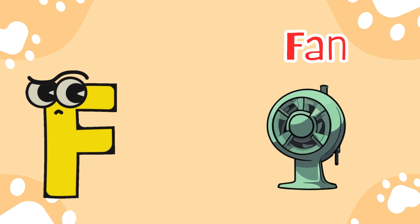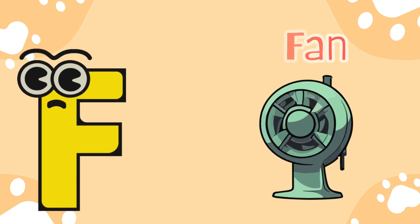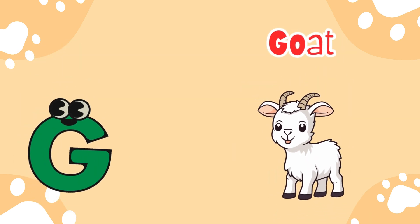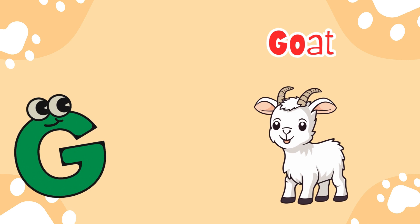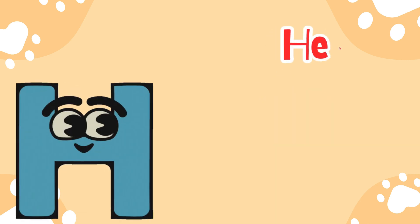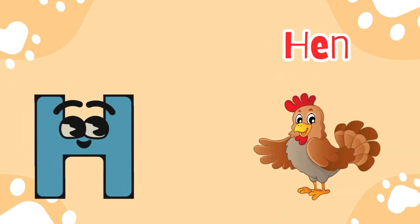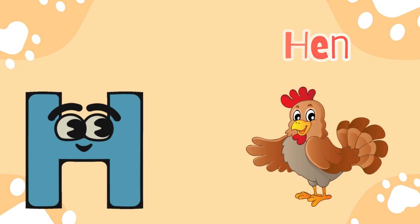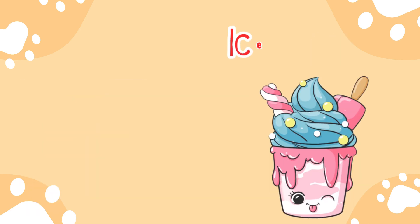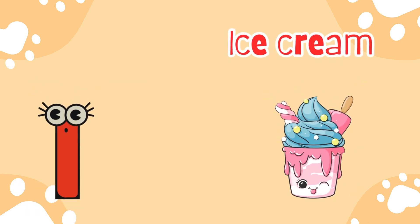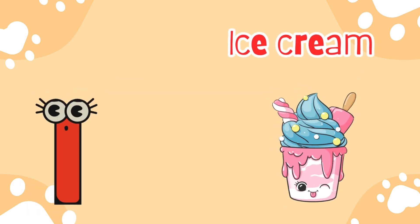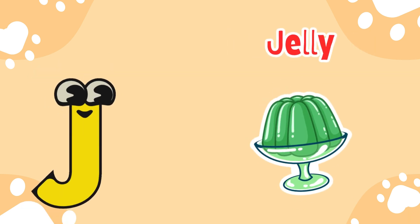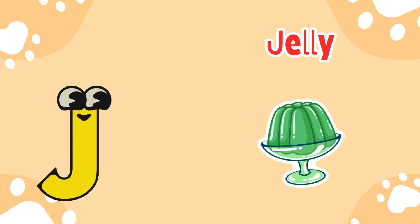F is for fan. G is for goat. H is for hen. I is for ice cream. J is for jelly.